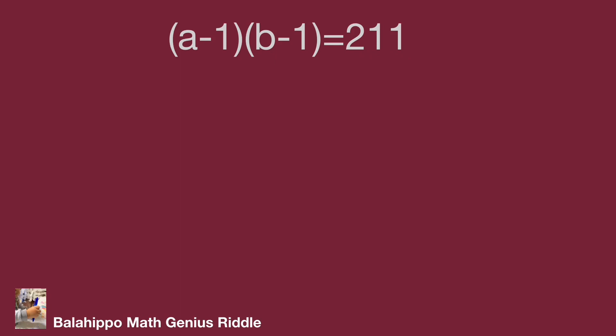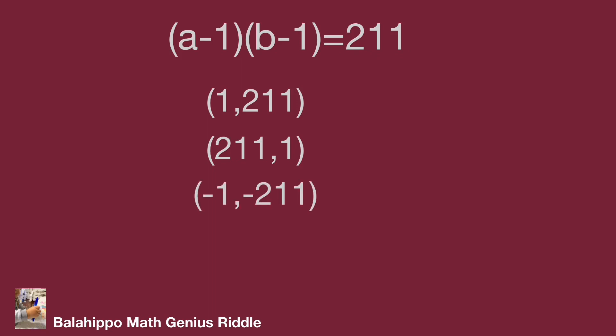The quantity (a − 1) multiplied by (b − 1) equals 211. Note that 211 is a prime number, and a and b are integers. Therefore, the factor groups for (a − 1) and (b − 1) could be: 1 × 211, 211 × 1, and the negative groups: (−1) × (−211), and (−211) × (−1).